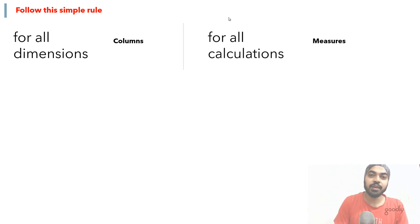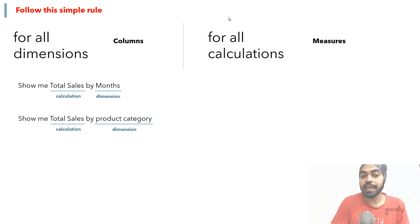Now before we proceed, it's important to understand what exactly do you mean by dimension and what exactly are calculations. So whenever somebody says, hey show me total sales by months, total sales is the calculation and whatever comes after the word 'by' is a dimension. Take a look at another example: show me total sales by product category - total sales is again a calculation, and the word after 'by' is the dimension, which is the product category.